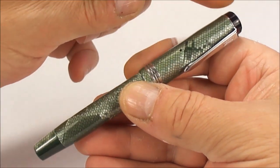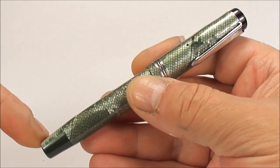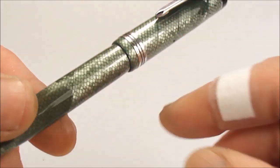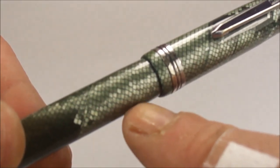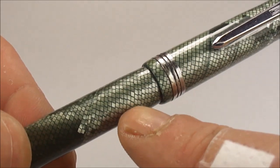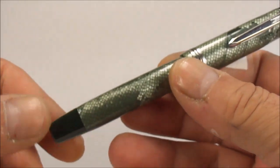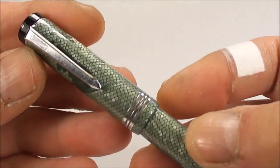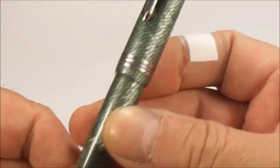So here we have it, the Mentmore Imperial. Size of this pen from the top of the cap to the bottom of the barrel is approximately 124 millimeters. The diameter of the barrel here is quite a nice chunky 11.9 millimeters. As we said, this is a button filler.